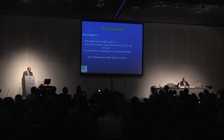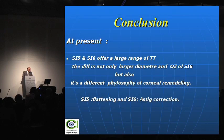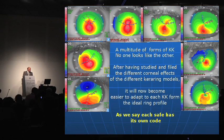In conclusion, SI5 and SI6 offer a large range of treatments. They represent different philosophies of corneal remodeling — SI5 for more flattening, SI6 for more astigmatism correction. Today we have a multitude of forms of keratoconus, no one looks like the other. After having studied and classified the different corneal effects of the different Keraring models, it becomes easier to adapt the ideal ring profile to each keratoconus form. Thank you.